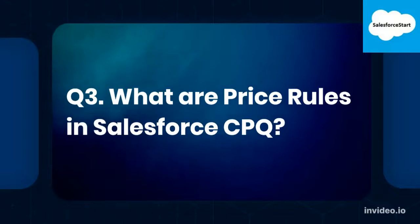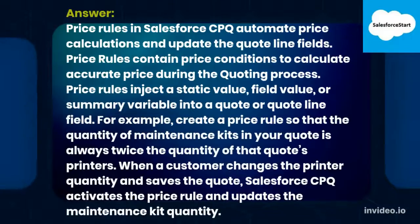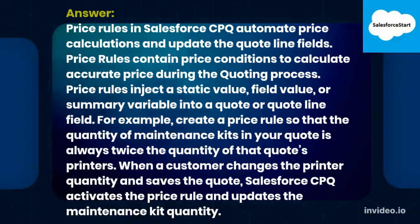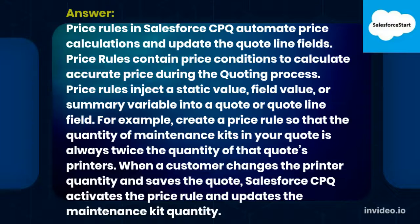Q3. What are Price Rules in Salesforce CPQ? Price Rules automate price calculations and update the quote line fields. Price Rules contain price conditions to calculate accurate prices during the quoting process. Price Rules inject a static value, field value, or summary variable into a quote or quote line field. For example, create a price rule so that the quantity of maintenance kits in your quote is always twice the quantity of that quote's printers.